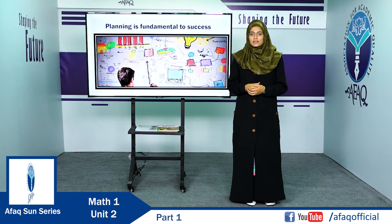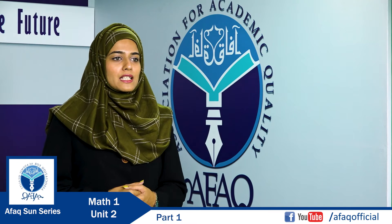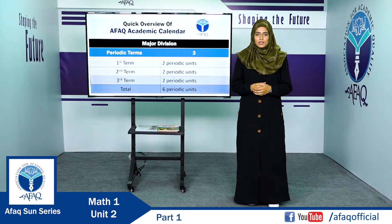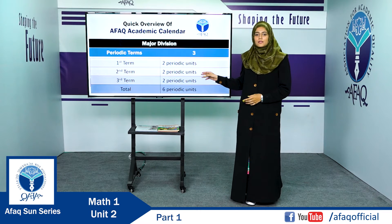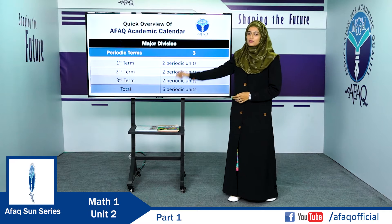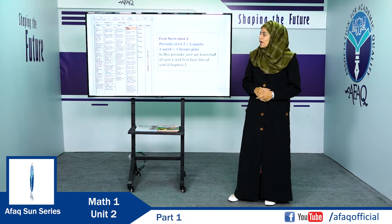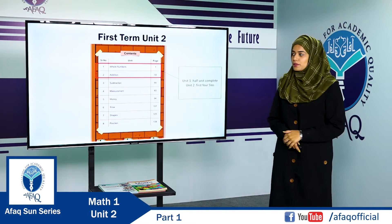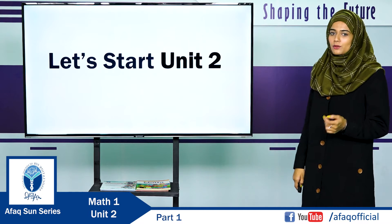Planning is the key to success. Without planning, we cannot complete our curriculum in the required time. For this, AFAQ has developed an academic calendar divided into three periodic terms. Each periodic term consists of two periodic units, and each periodic unit consists of six weeks — five weeks for learning and teaching, and one week for assessment. In Term 1, Unit 2, we are going to discuss whole numbers and addition.